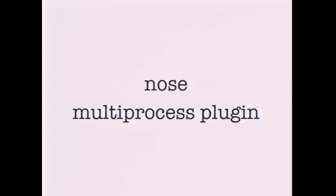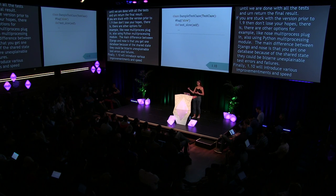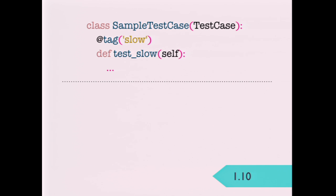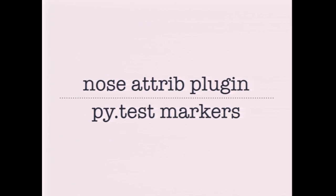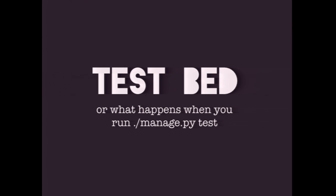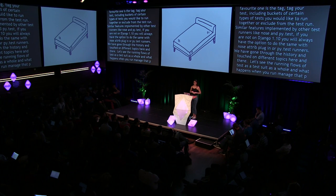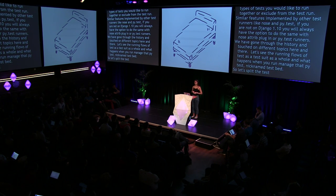The main difference between Django's parallel and Nose's multiprocess is that with Nose you get only one database. Because of the shared state, there could be bizarre unexplainable test errors and failures. And finally, 1.10 will introduce various improvements and speedups, but the favourite is tags. You can tag your tests creating buckets of certain types to run together or exclude from a test run. A similar feature is in Nose and PyTest. Let's now see the flow of running tests as a whole — what happens when you run manage.py test, which I'll call the testbed.